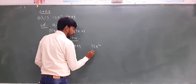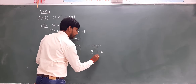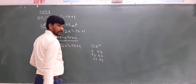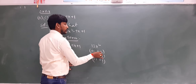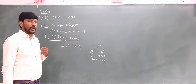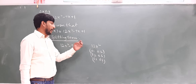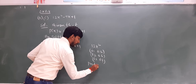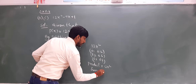Now we need factor pairs of 12 such that the product is 12x² and the sum is minus 7x. The factor pairs are: plus or minus 1 and plus or minus 12, plus or minus 2 and plus or minus 6, plus or minus 3 and plus or minus 4. These are the factor pairs to satisfy the product of 1 into 12 is 12. We want the sum to be minus 7.